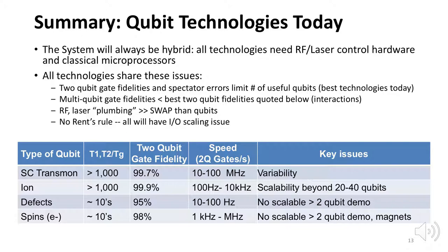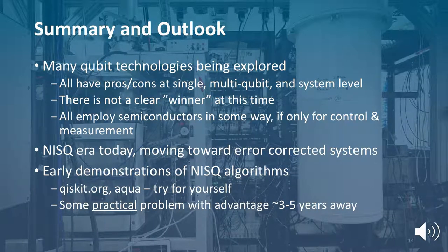The technologies have different issues: variability in frequency for superconducting qubits, scalability of ion traps, and for defects and spins, no viable scaling path for a 2D array of interconnected qubits has been demonstrated. Quantum computing offers great promise to solve some of the hardest computational problems known to man, but much research is required before we see computational benefit.